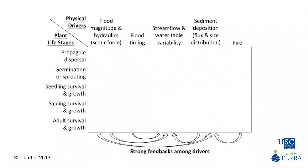Based on what you learned in this presentation, we propose you to think and summarize the main physical influences on woody riparian plants in the case of Mediterranean rivers. You can do it by filling this conceptual matrix using symbols to indicate the relative magnitude of the influence of each physical driver on the different life history strategies. You will find the proposed solution in the following slide.